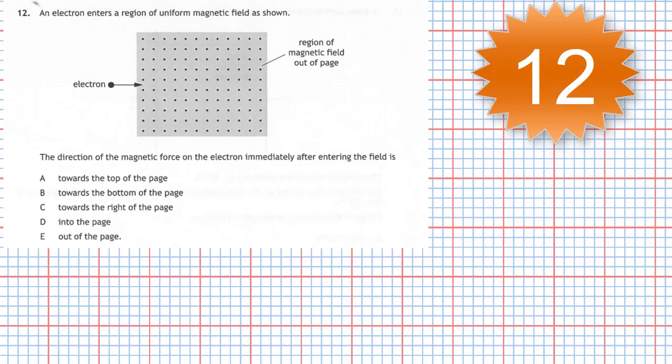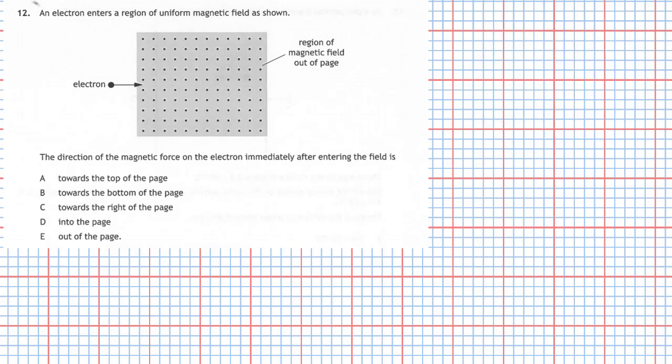Question 12 from section 1 of the 2019 higher physics examination. An electron enters a region of uniform magnetic field as shown. The electron moves from left to right and the region of magnetic field is out of the page. The direction of the magnetic force on the electron immediately after entering the field is, and we're given five choices.